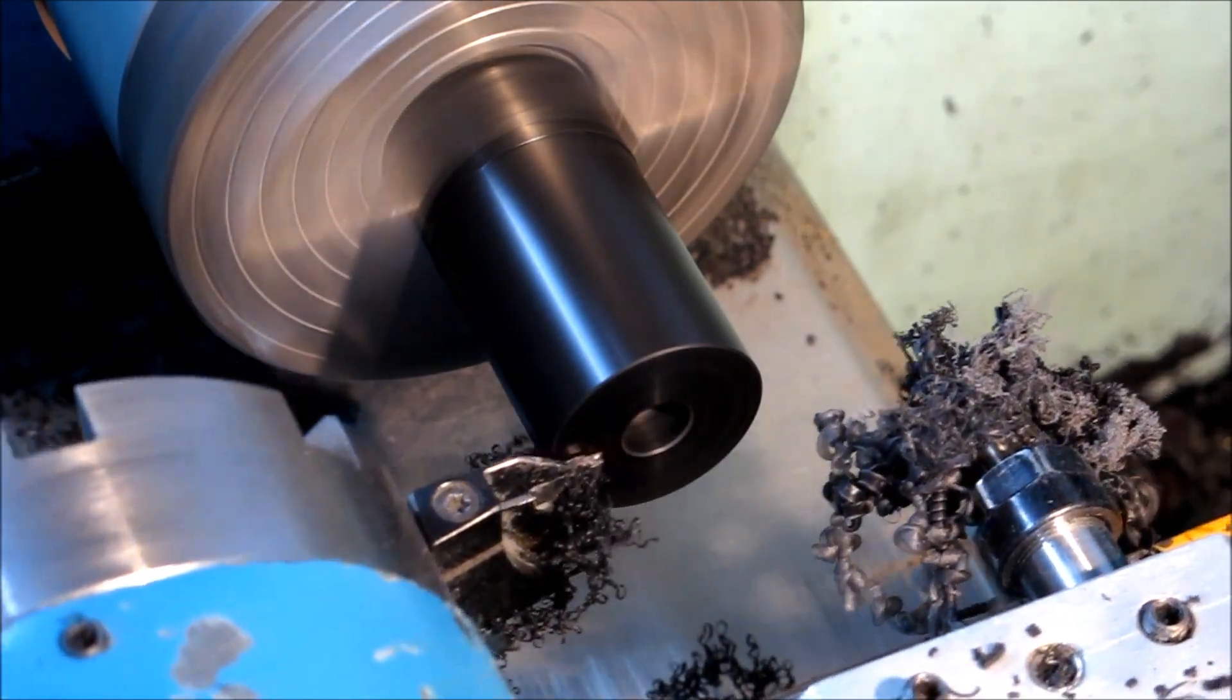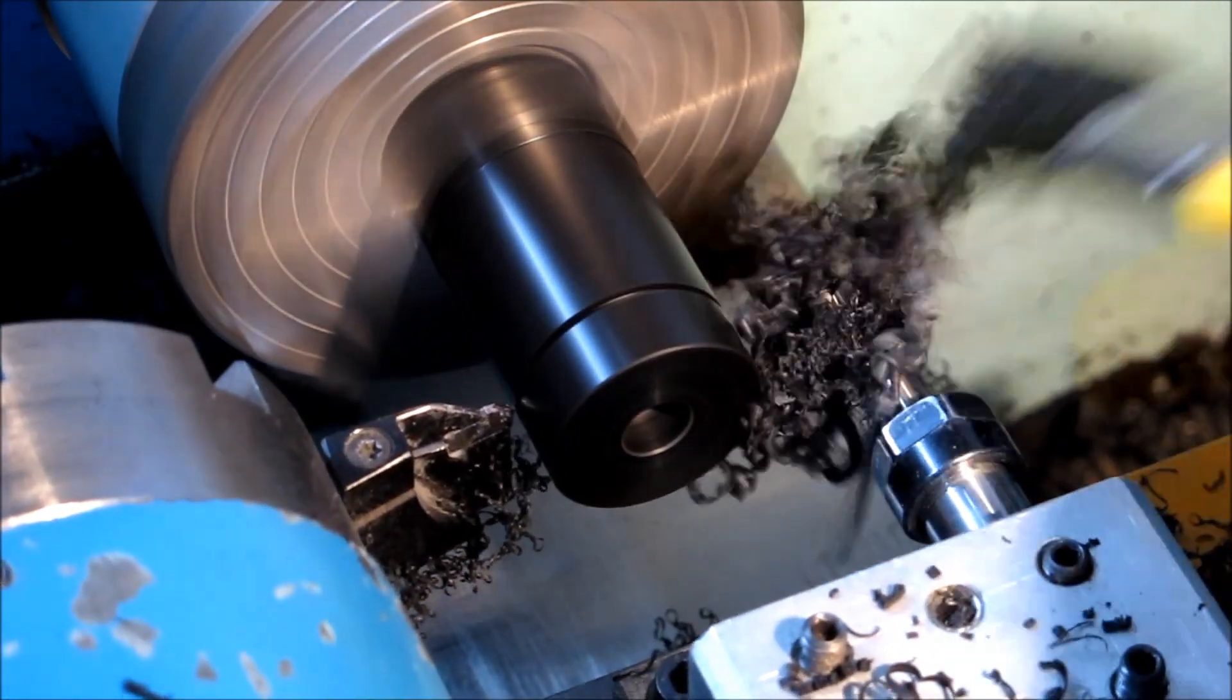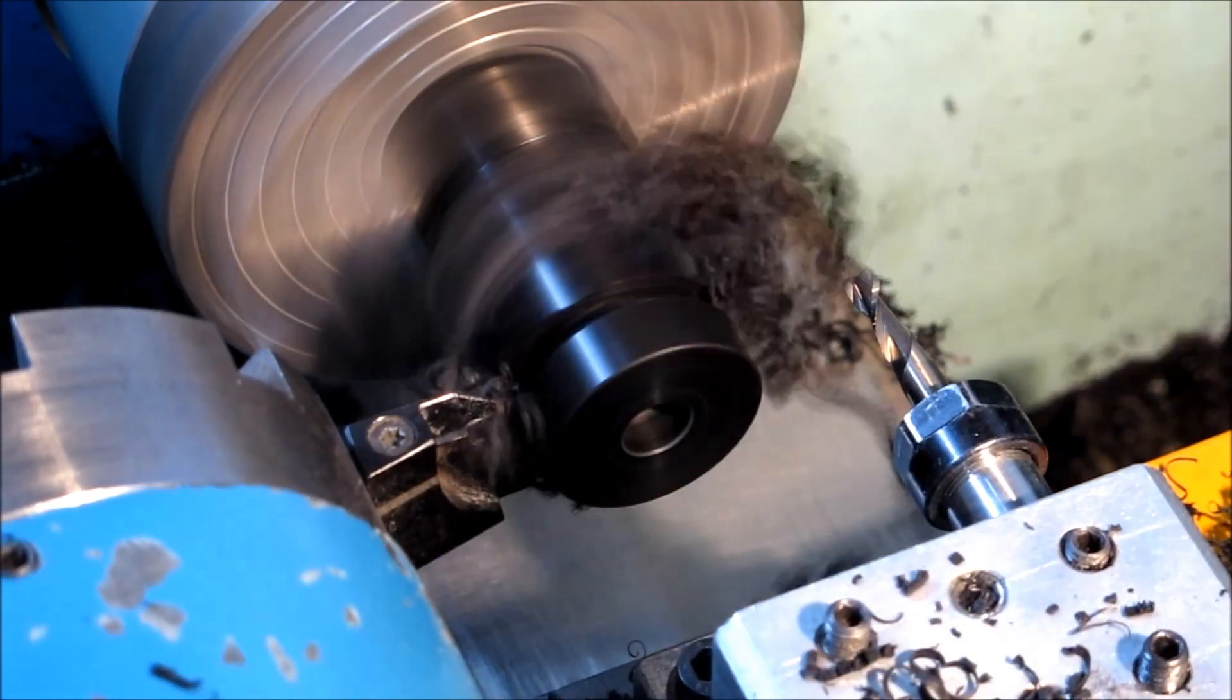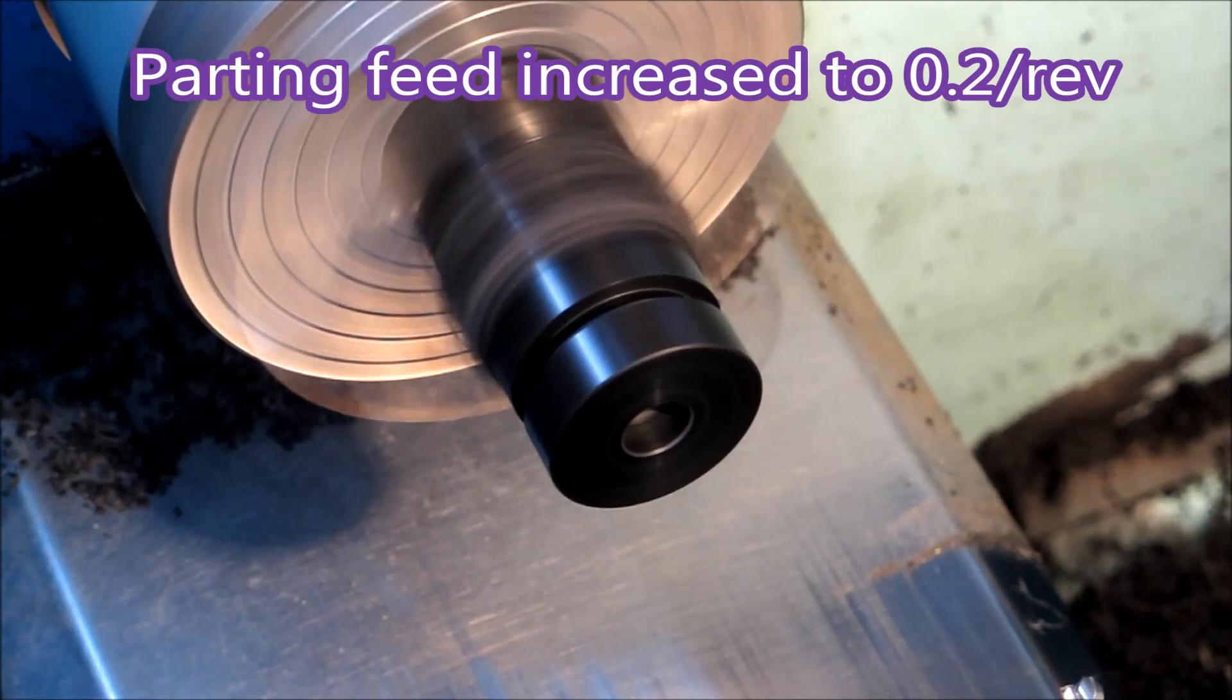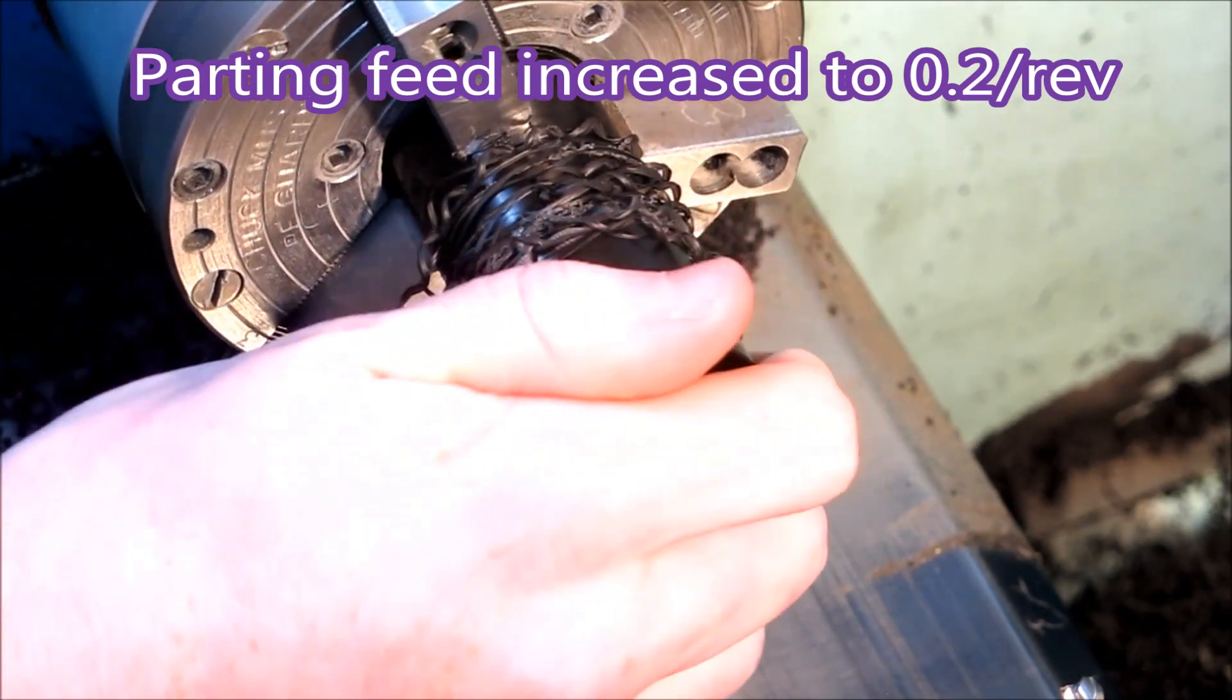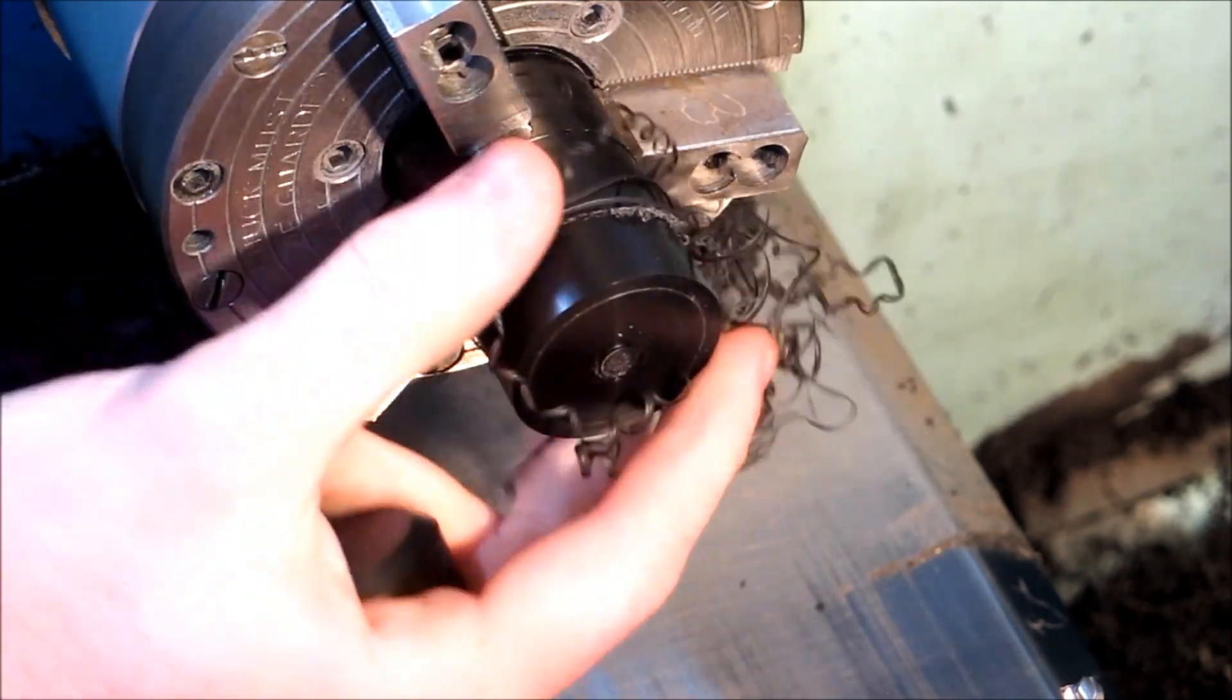Put the chamfer on there and face up the end. A couple of grooves. And then do the chamfer and part it off. By increasing the parting feed to 0.2, it stopped the swarf from creating damage to the face of the part.